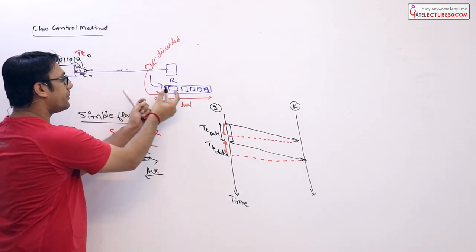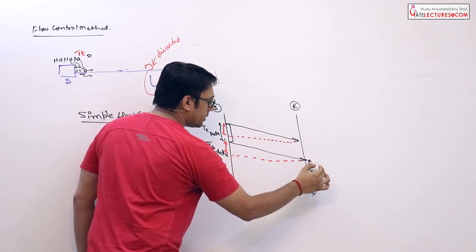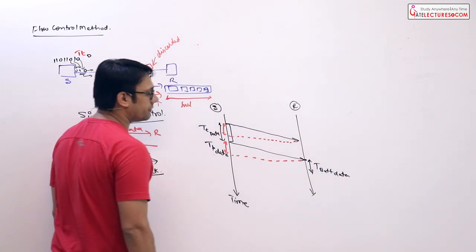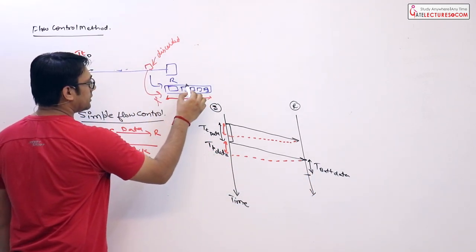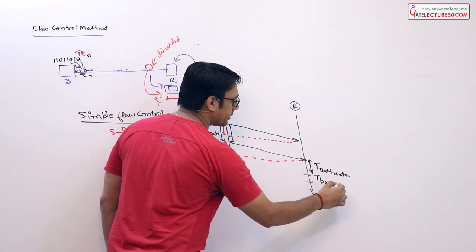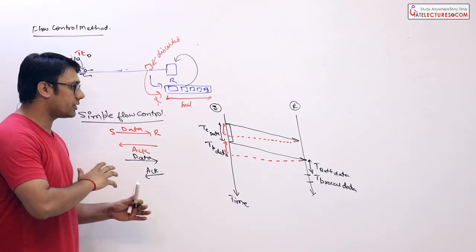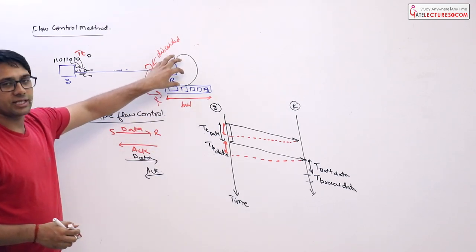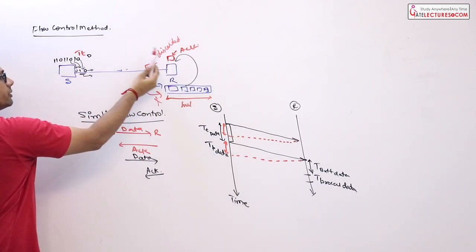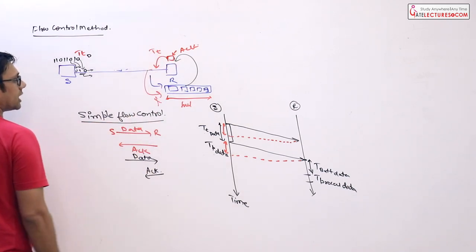After the receiver receives the data, it places the data packet into the buffer. The time the data packet stays in the buffer is called buffering delay, T_buffer for data. After that it is taken for processing, and the time for that is T_processing for data. After processing, the receiver sends an acknowledgement. The receiver creates an acknowledgement packet and sends it back to the sender, which again requires a transmission time for the acknowledgement.